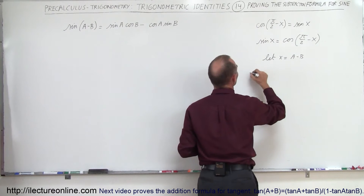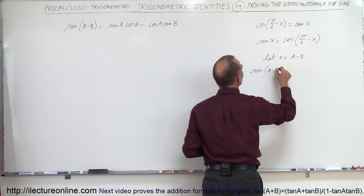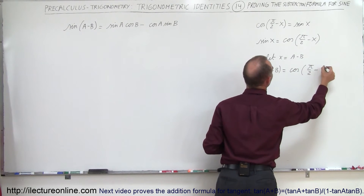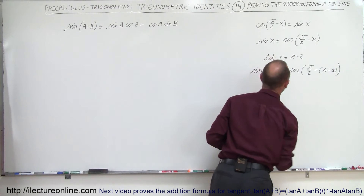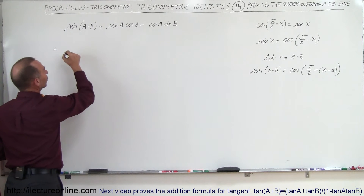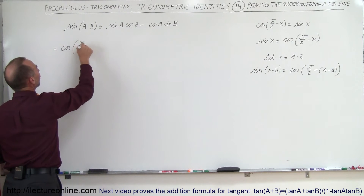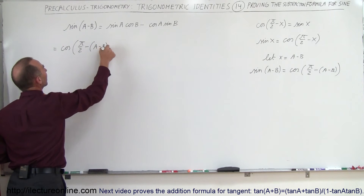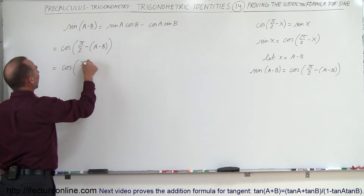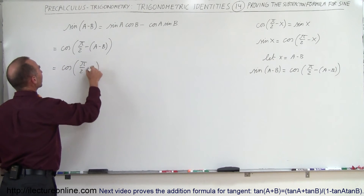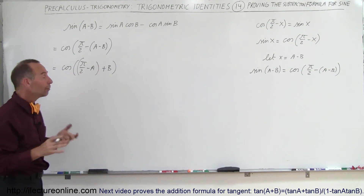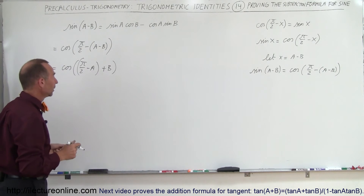This then becomes: the sine of a minus b is therefore equal to the cosine of pi over 2 minus a minus b. We can now write that this is equal to the cosine of pi over 2 minus a minus b, which we can rewrite as the cosine of pi over 2 minus a, and minus times minus becomes plus b. Now we've changed it into the sum of two angles inside the cosine function.